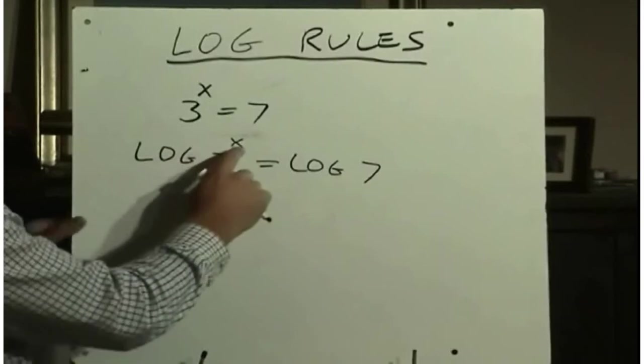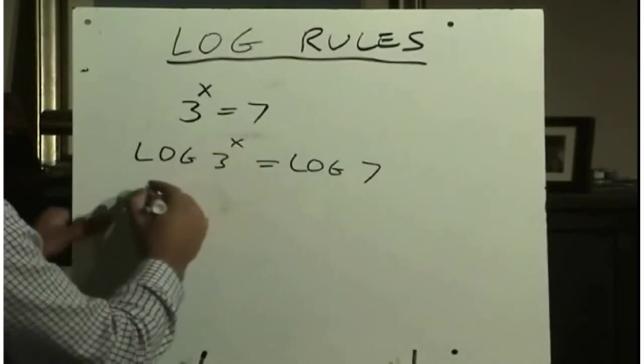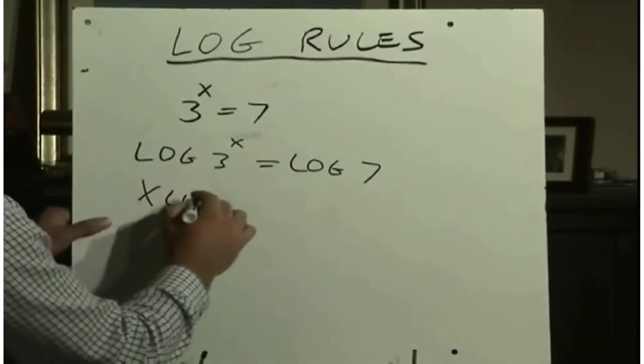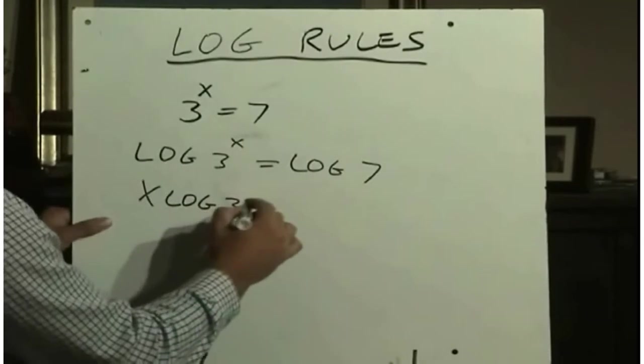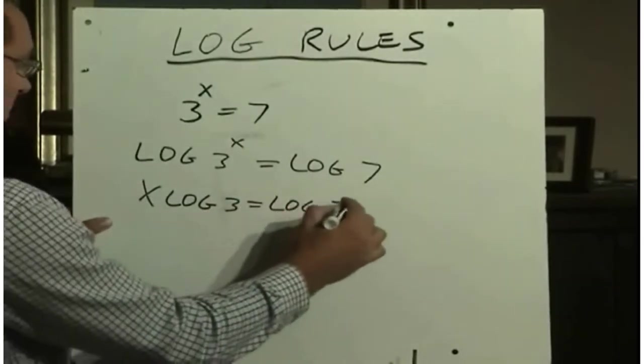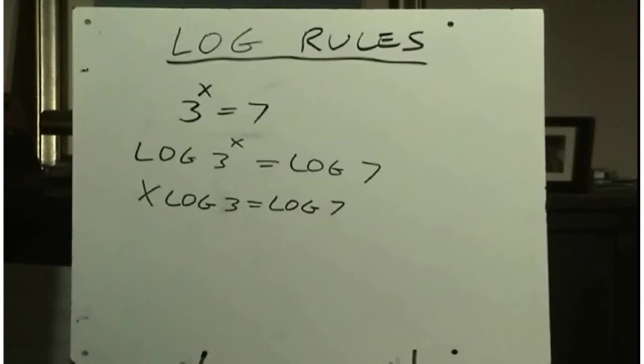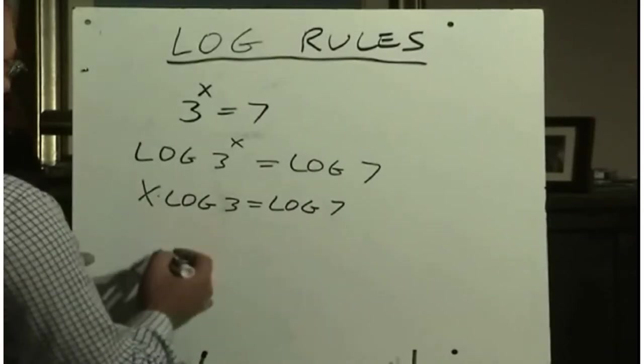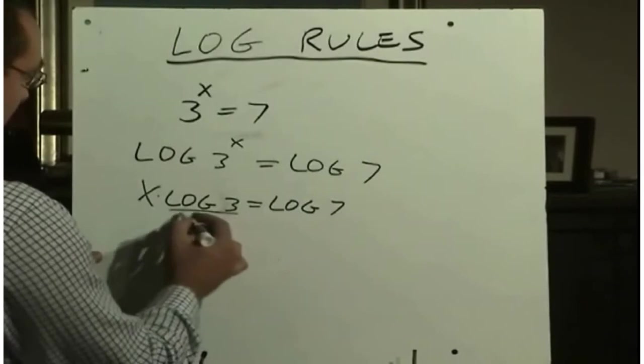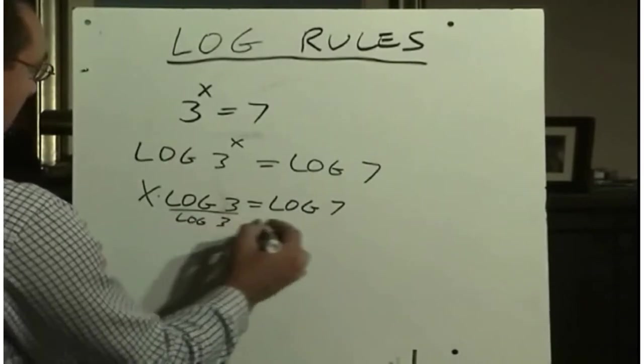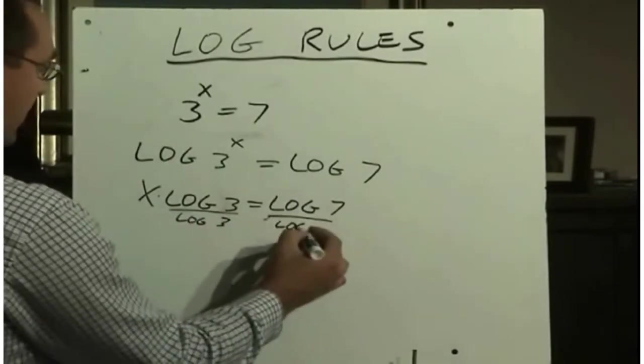And since I have an exponent, the exponent rule will allow me to put the exponent down in front. And so I have x log 3 equals log 7. And then to isolate x, because this is an equation that I'm solving for, I need to divide both sides by log 3.